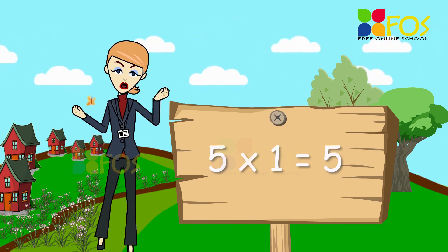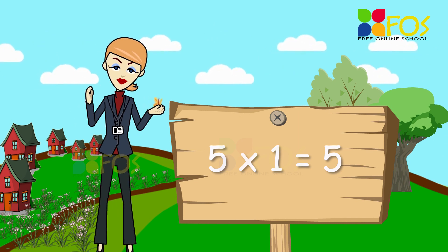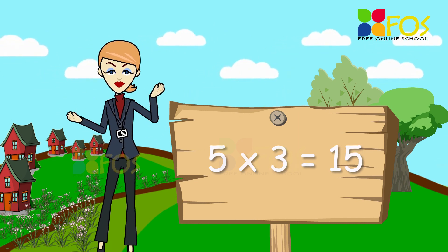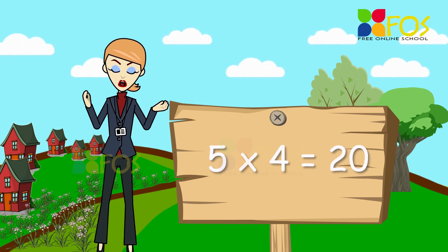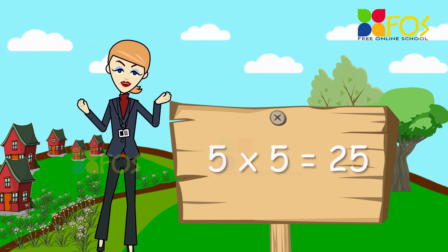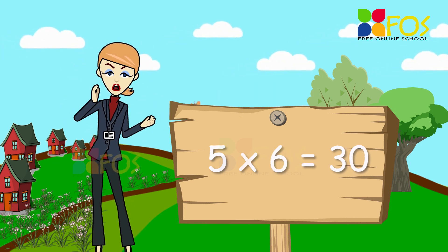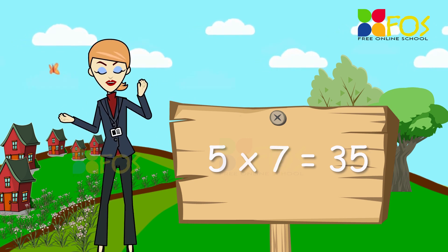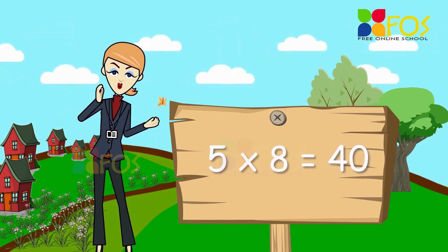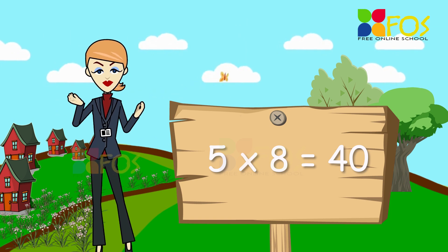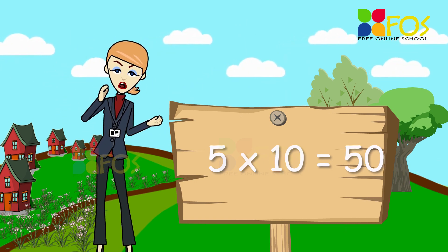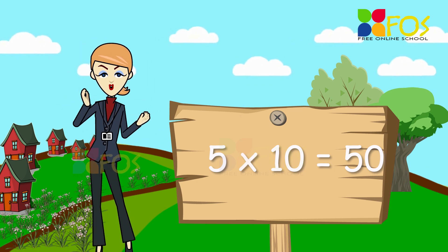Five ones are five. Five twos are ten. Five threes are fifteen. Five fours are twenty. Five fives are twenty-five. Five sixes are thirty. Five sevens are thirty-five. Five eights are forty. Five nines are forty-five. Five tens are fifty.